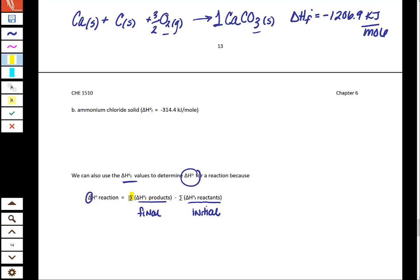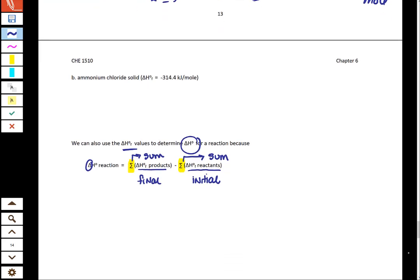For those of you who haven't seen these symbols before, the ones I've just highlighted in yellow are summation symbols. It means that you're taking all the products and you're summing the delta HFs for them together, and you're subtracting the summation of all the reactants delta HFs.